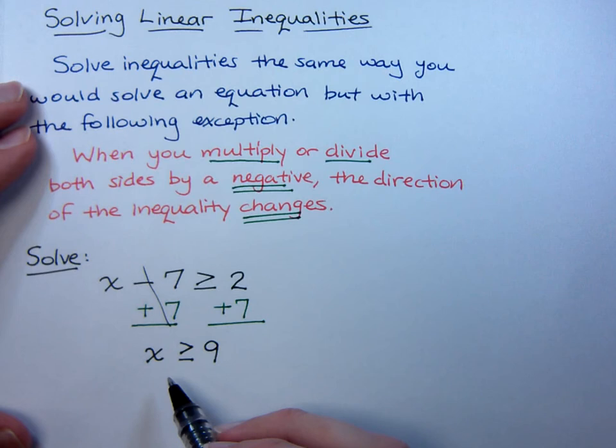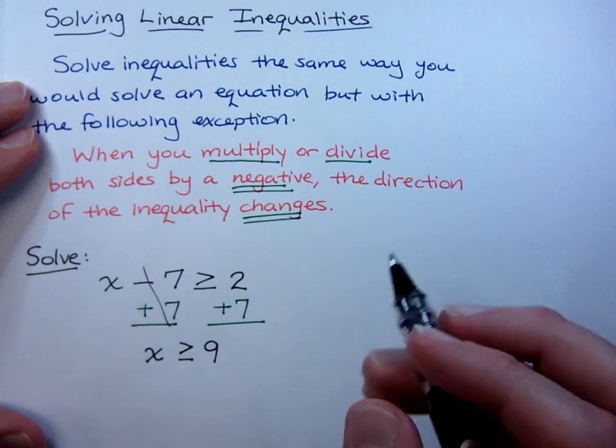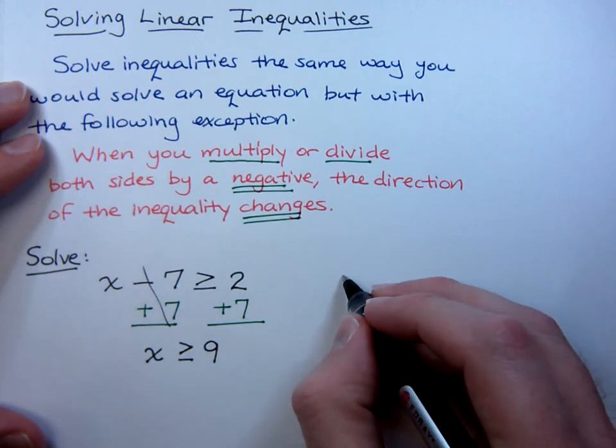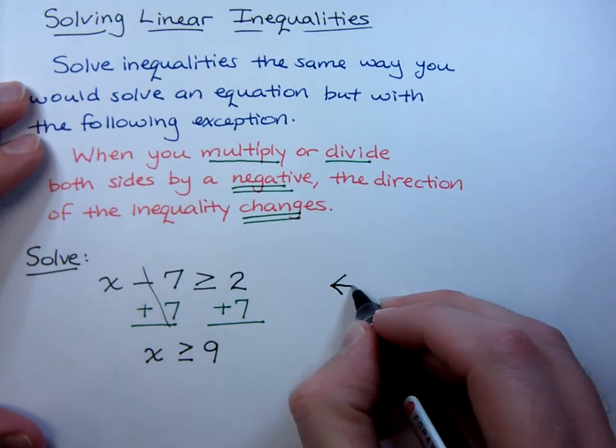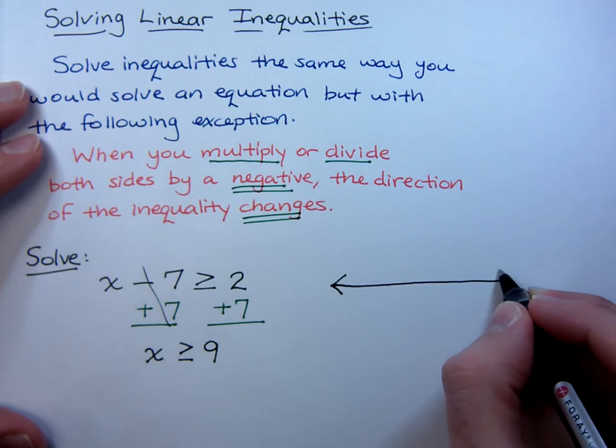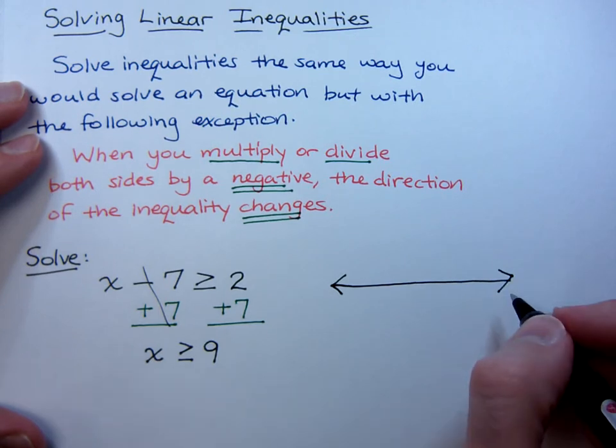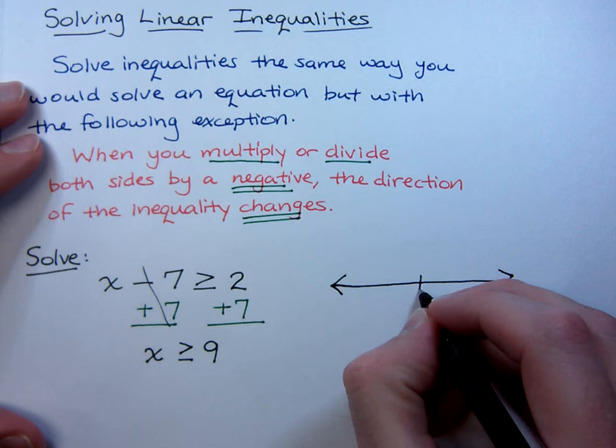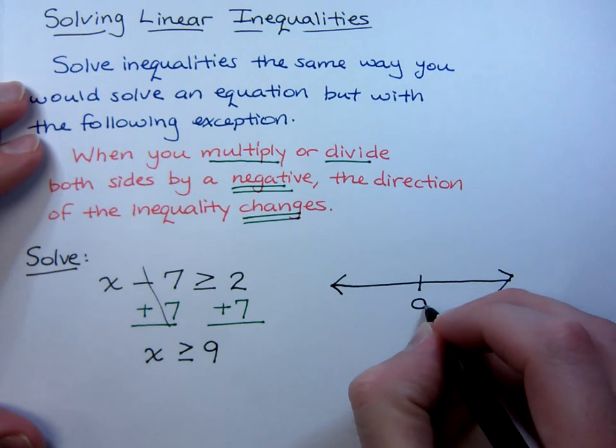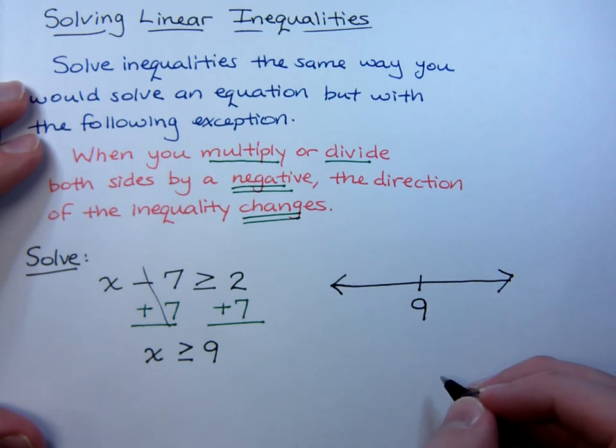and 2 plus 7 is just 9. So, you just solved an inequality. This is it. Now, in terms of expressing the solution, a lot of times, the book is going to ask you to graph your solution set. Now, over here, the only number that I care about is the number 9. That's the only number I care about.